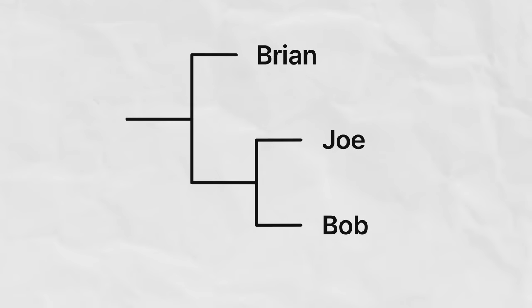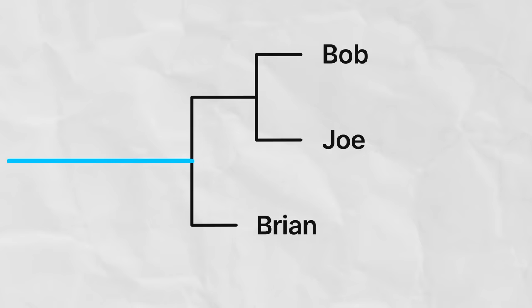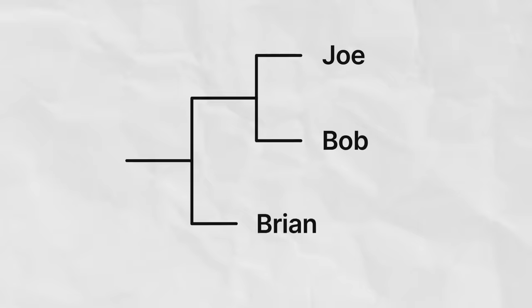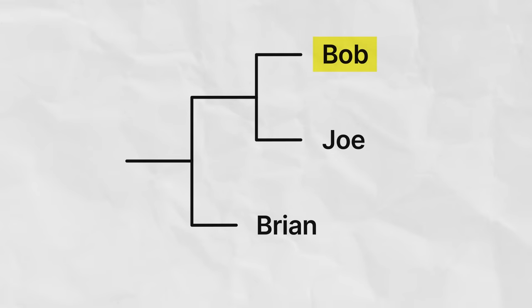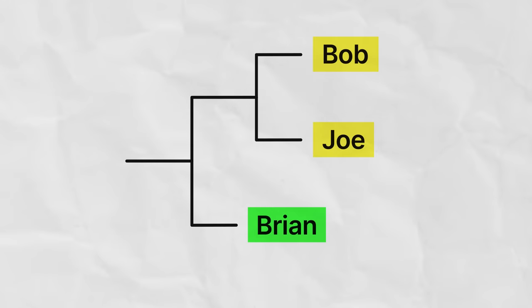Whichever two share ancestors most recently with one another are more closely related. The relationships between them are the same if I draw the phylogeny in different orientations. These branching points represent the last time that two individuals or groups shared common ancestors. Brian shared all of these ancestors with Bob and Joe, and this was the last time he shared ancestors with either of them. Since he shares the same ancestors with Bob and Joe, I can't say which one of them is more closely related to Brian — he is equally related to both. Bob, however, is more closely related to Joe than to Brian, because he shares ancestors more recently with Joe.